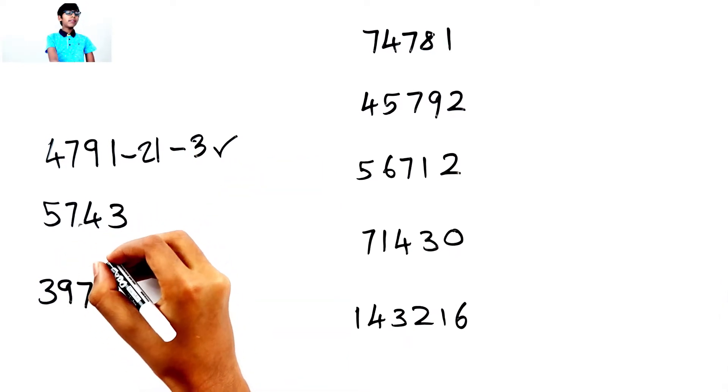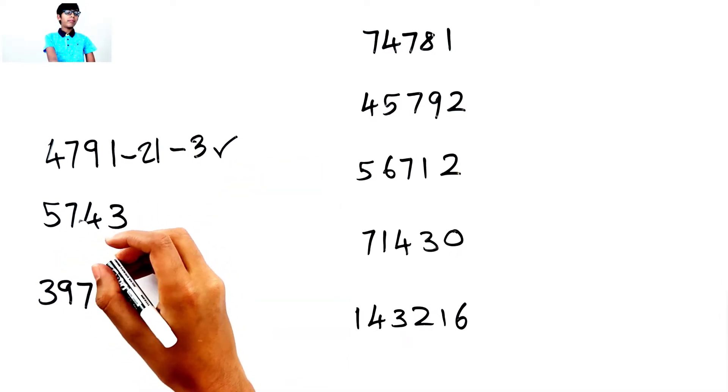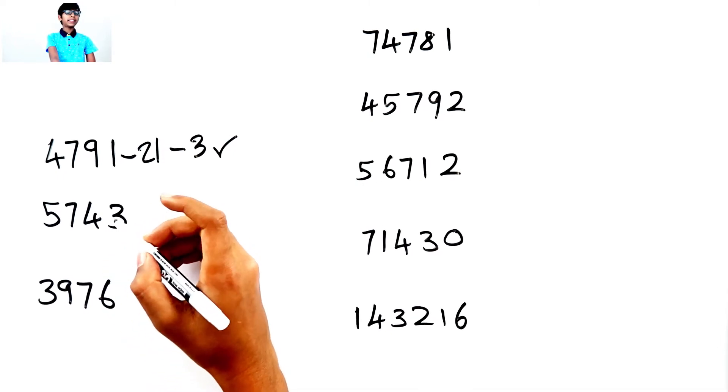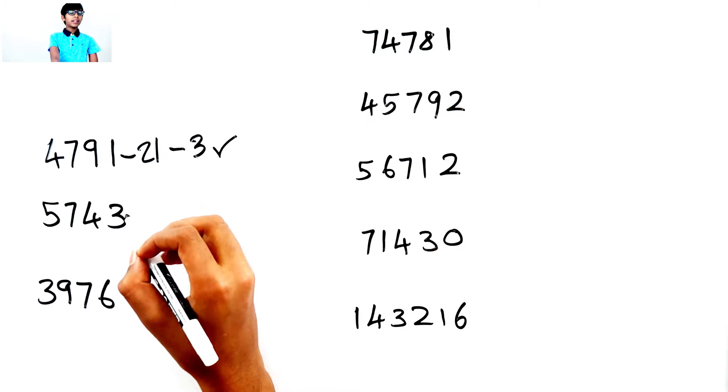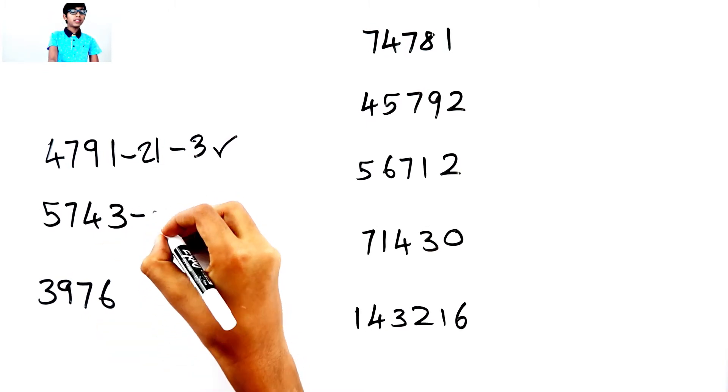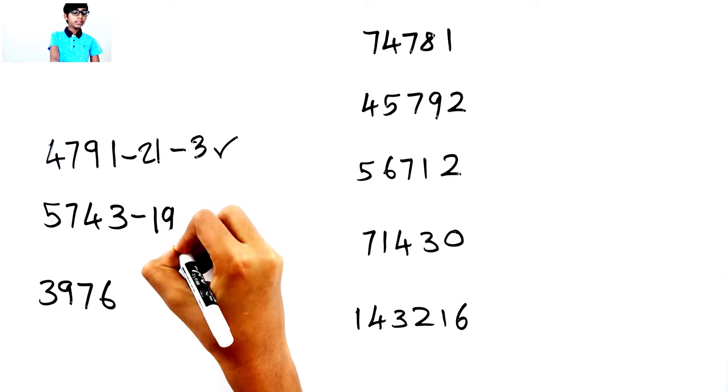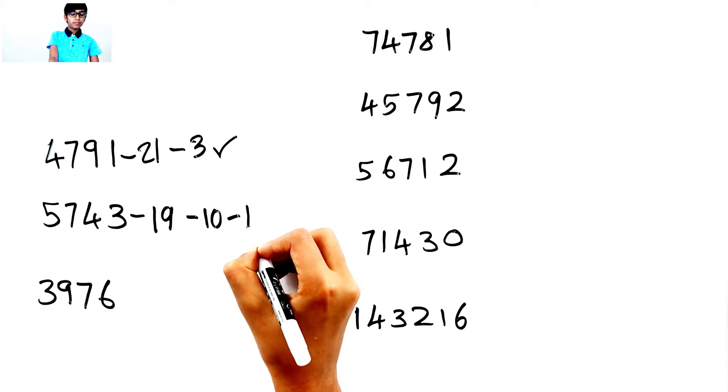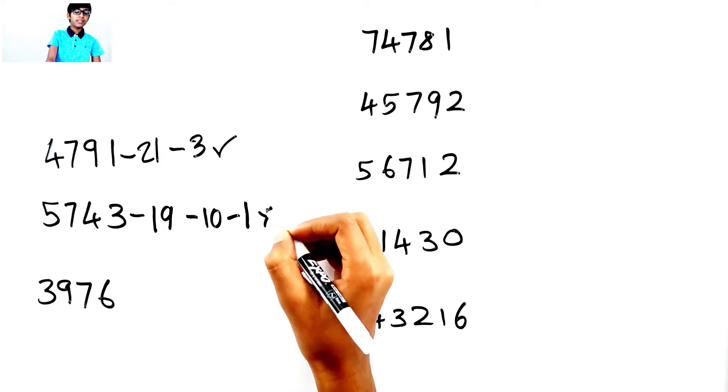Okay, let's look at this number. So, 5 plus 7 is 12. 12 plus 4 is 16. 16 plus 3 is 19. So, 19. Which is 10. 1. It cannot be divided by 3.